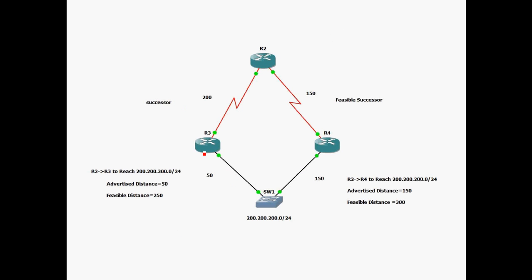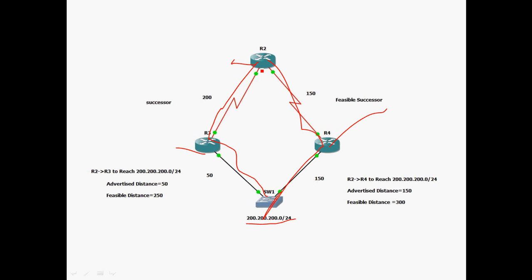In the example topology, we have R2, R3, and R4 routers. R2 wants to learn the 200.200.200.0/24 network. There are two possible ways to reach it: R2 to R3 to Switch1, or R2 to R4 to Switch1. The metric value for R2 to R3 is 200, and R3 to Switch1 is 50.